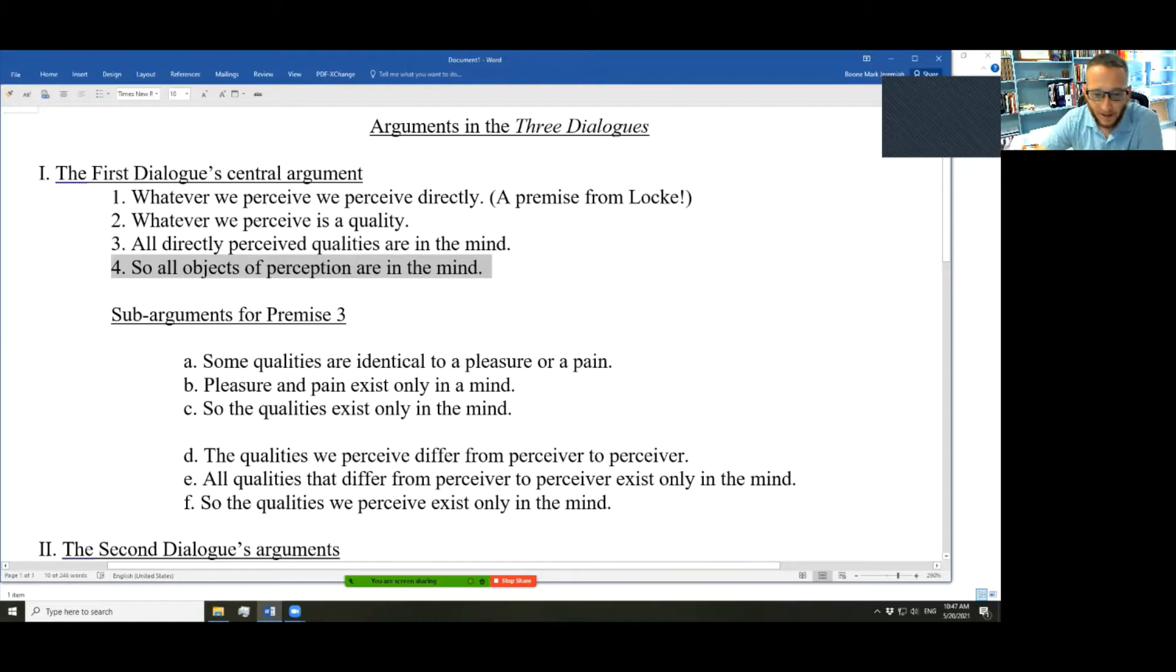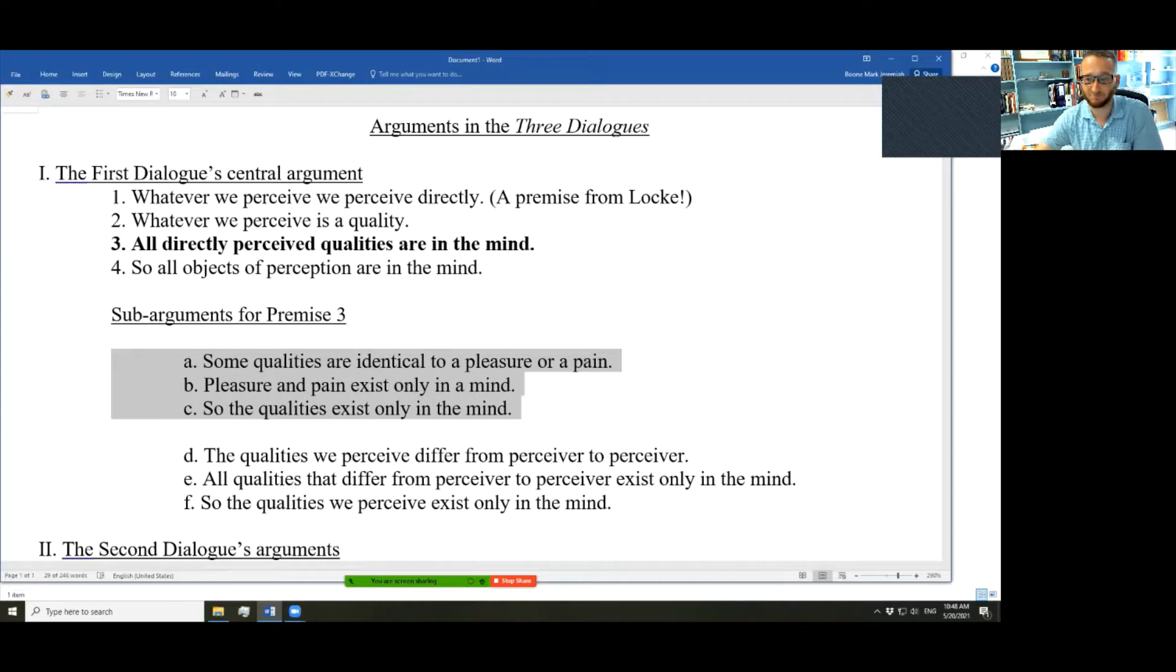Now, these are the sub-arguments that are given for that third premise. Any quality which we perceive directly is in the mind. How do you know that? Well, because some qualities are identical to pleasures and pains. Pleasure and pain can exist only in a mind. So these qualities exist only in the mind.